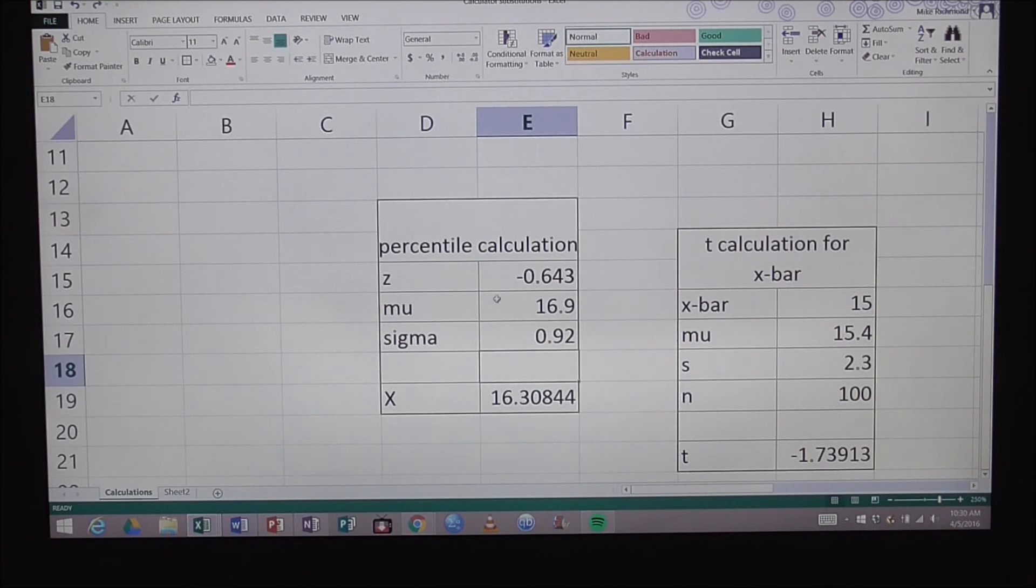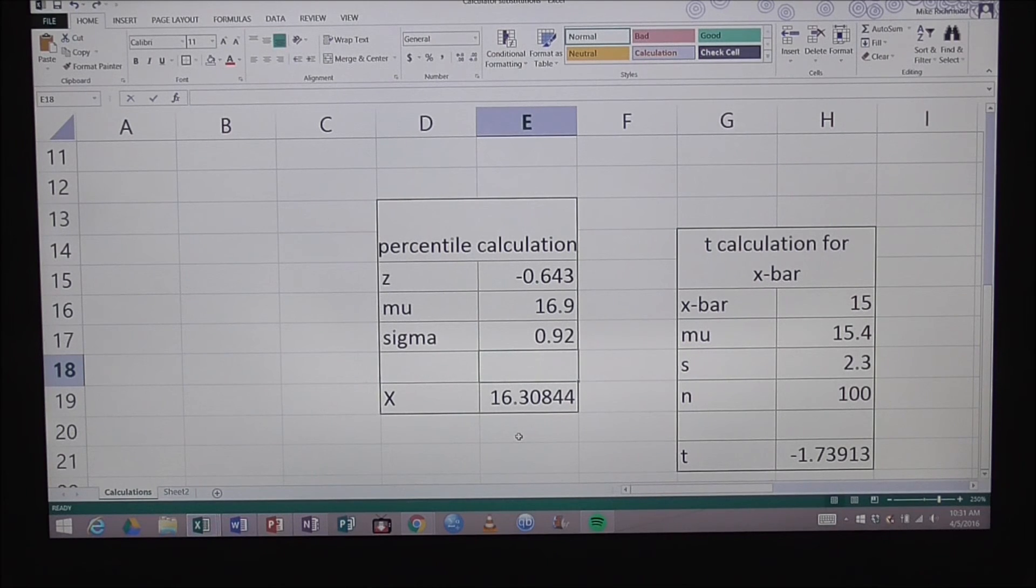Now that I've stuck those values in there, my calculation is going to give me x, which is z times sigma plus mu, and that's 16.30844. So if I wanted to round this to three digits past the decimal, I would report 16.308, and that would be the 26th percentile of the weight of six-month-old baby girls in the U.S.